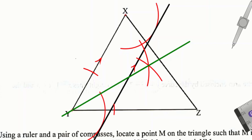Point M is therefore the intersection of these two loci. The first locus is the line two centimetres from line YX — the line parallel to YX. The second is the angle bisector we just constructed. Where they meet is the location of point M.